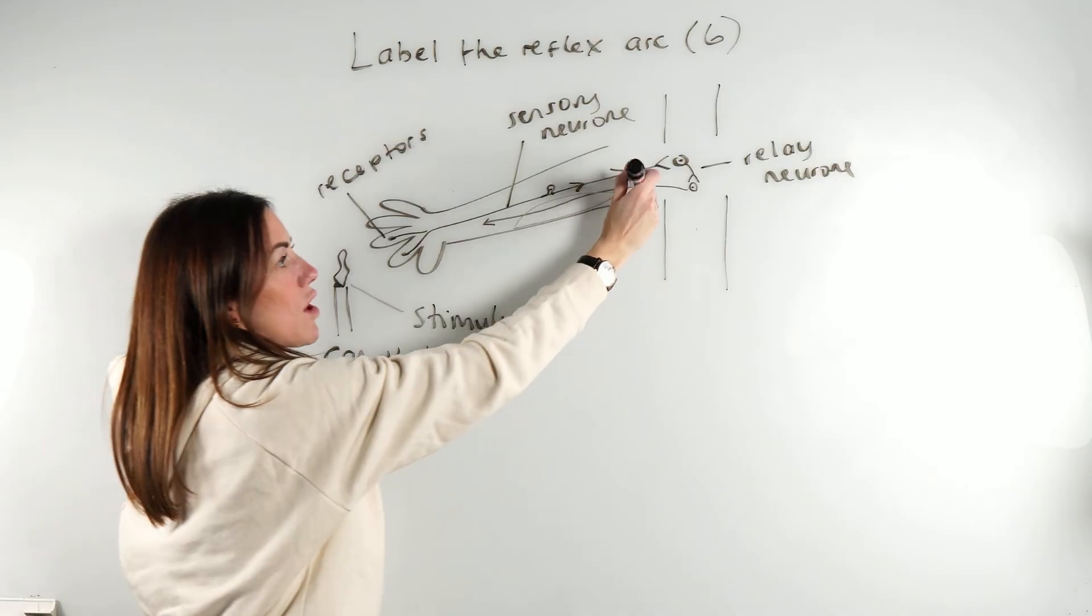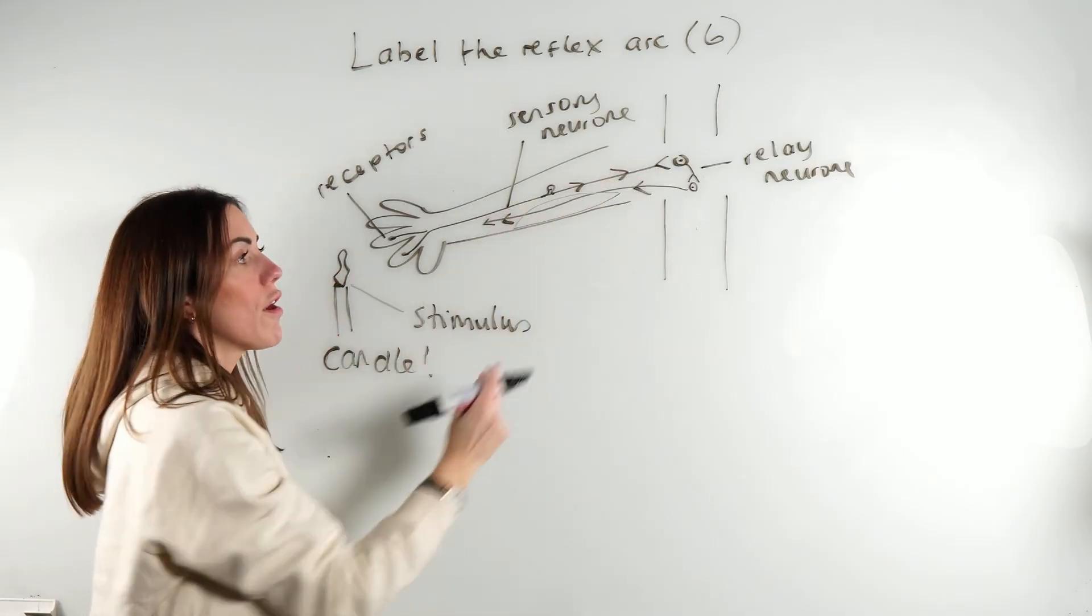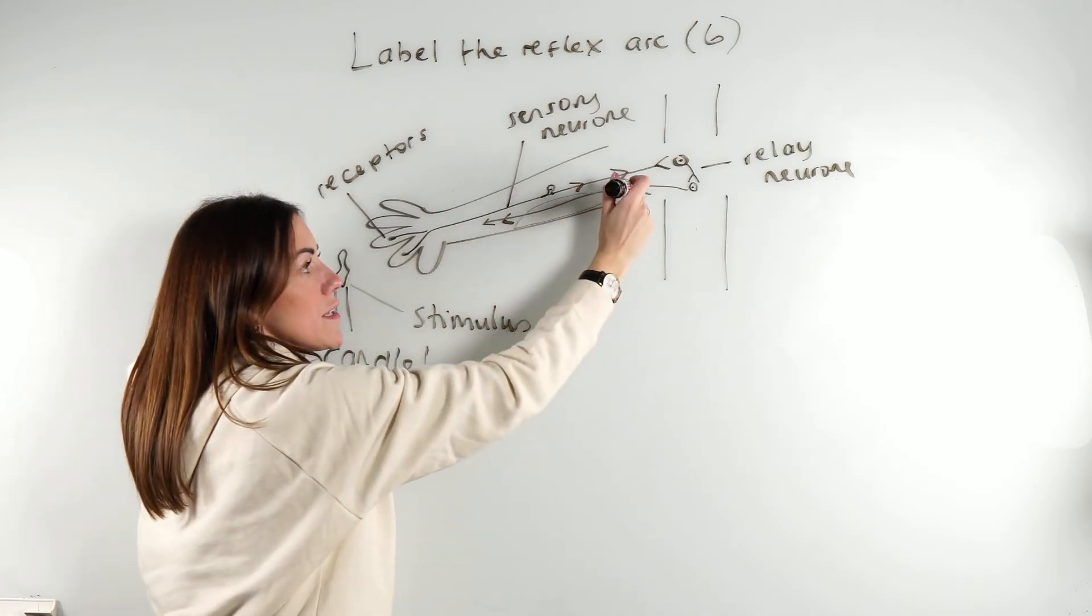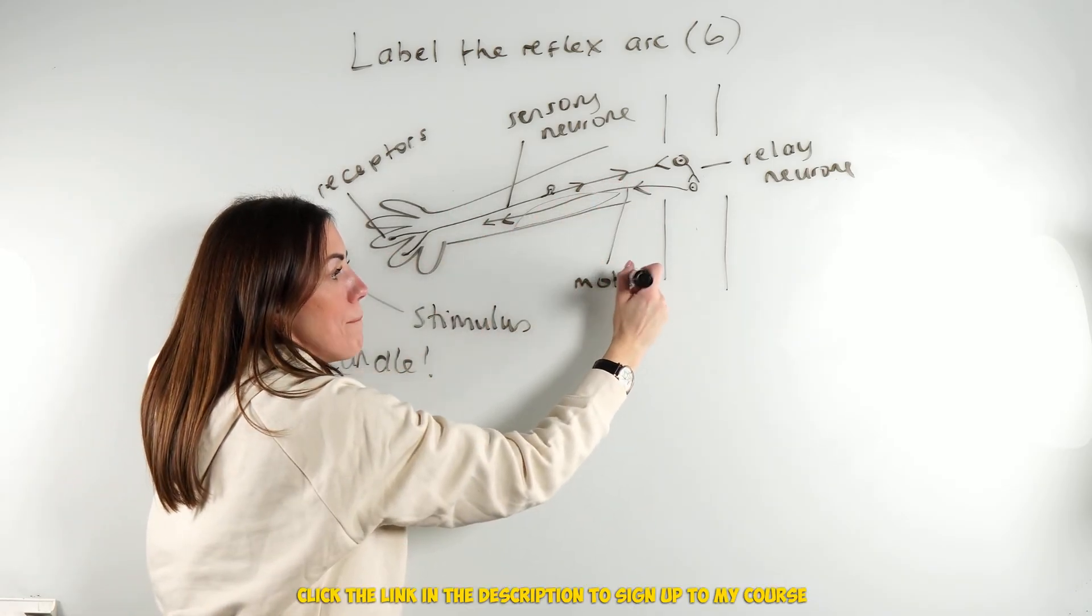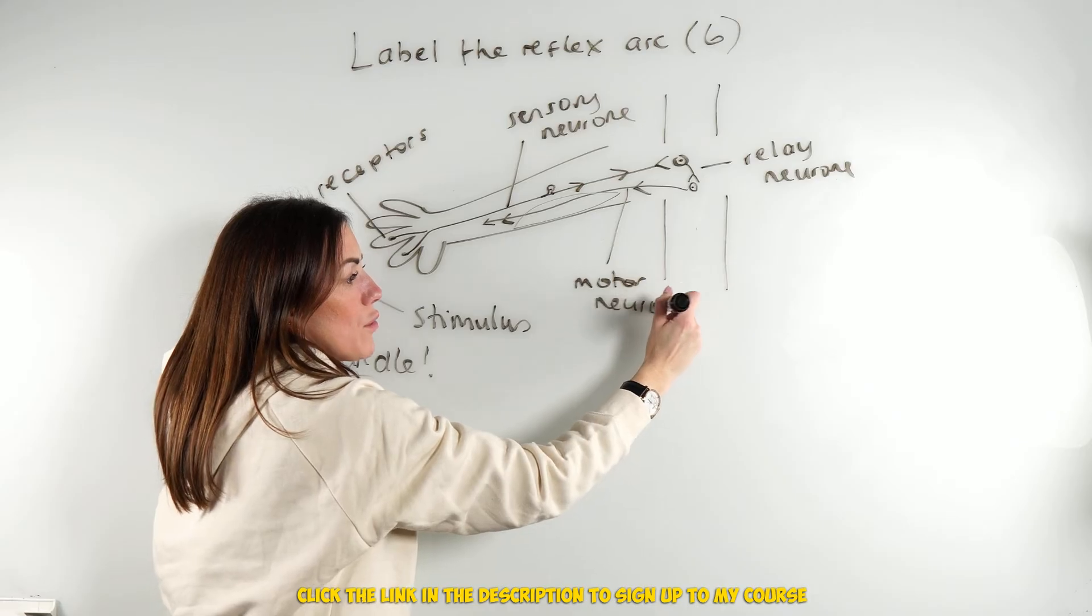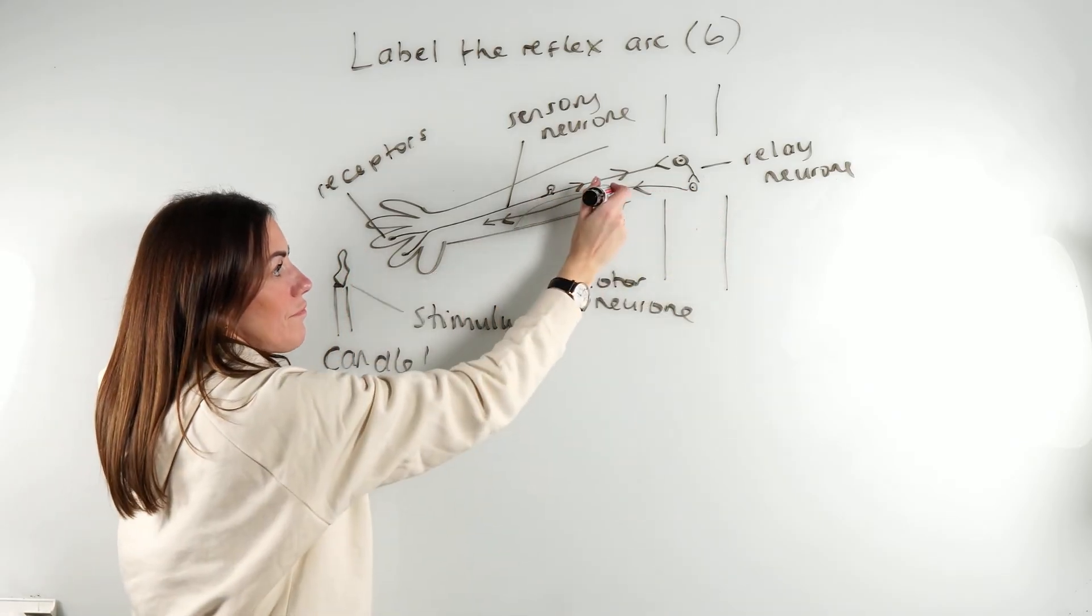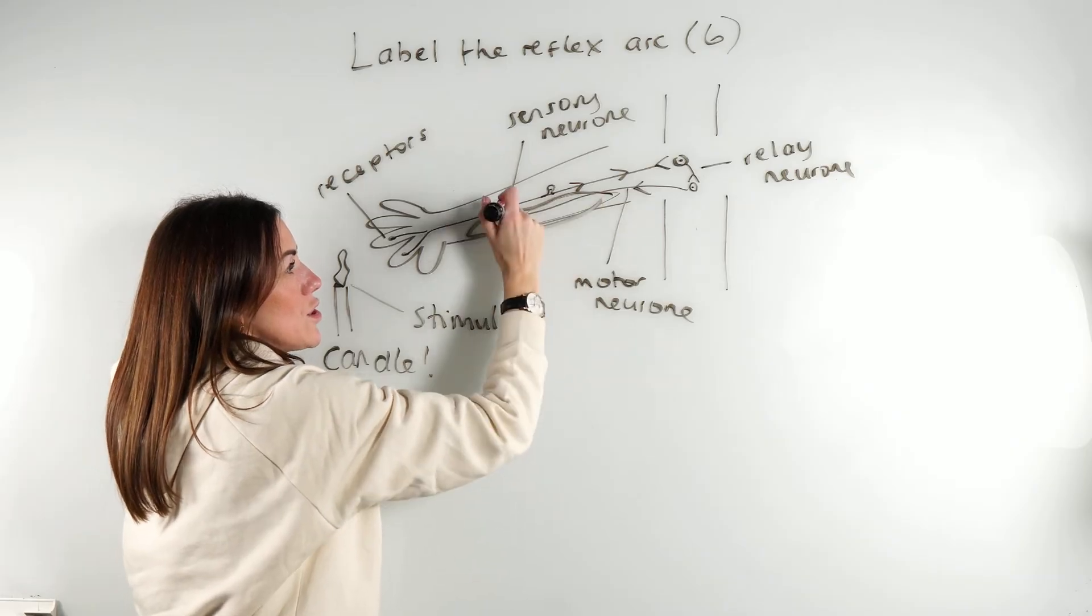Finally, we've got our third and final neuron that's going from the central nervous system back out and away. So that must be our motor neuron, which is going to carry the electrical impulse in this direction to an effector.